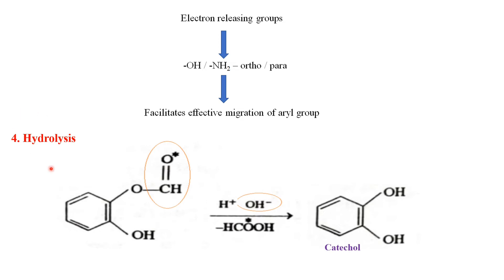The fourth step is hydrolysis. The aryl formate is hydrolyzed by water. The hydroxyl ion from water is added to the formate aldehyde group, which is removed as formic acid. The remaining proton is added to the oxygen, giving catechol. These are the four steps in the mechanism of the Dakin reaction.